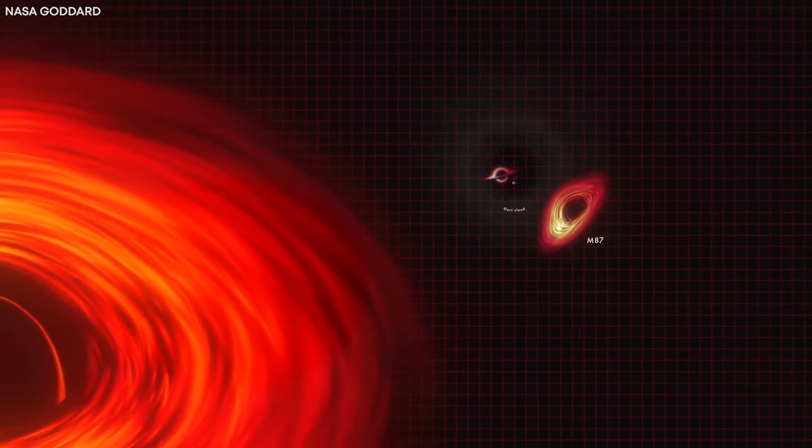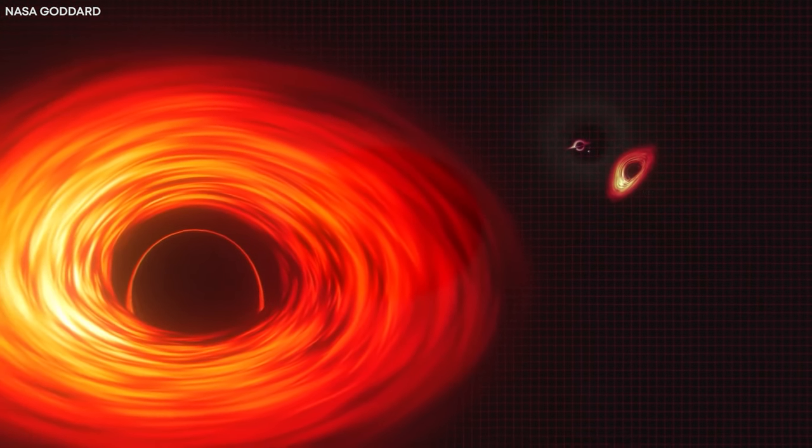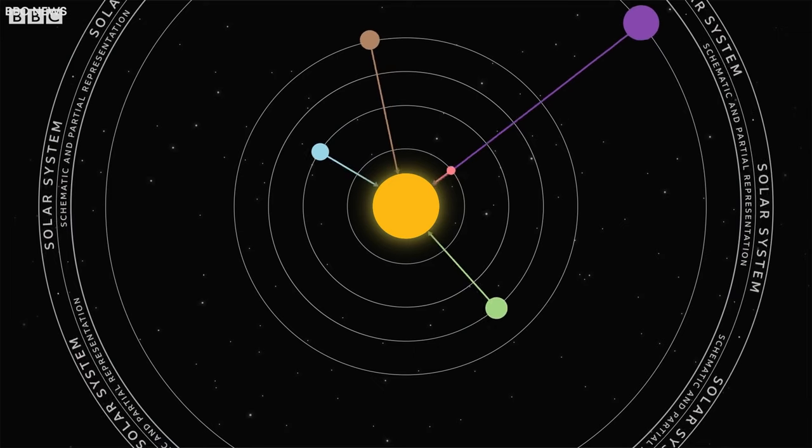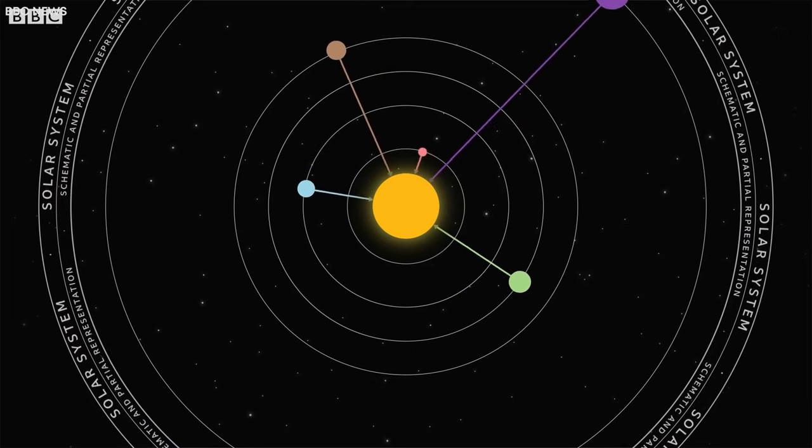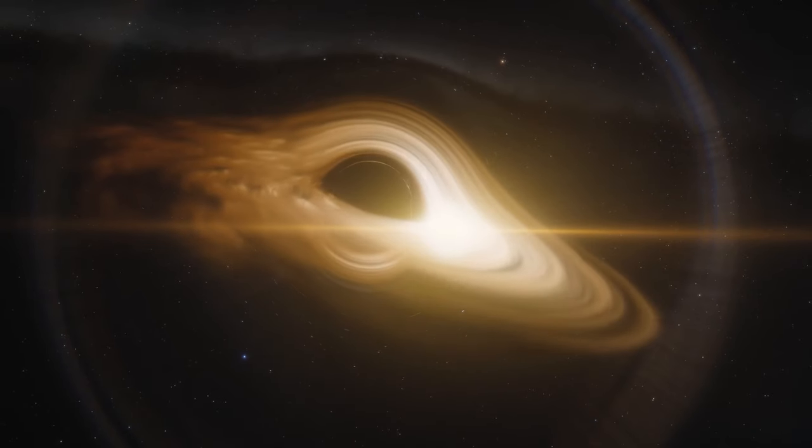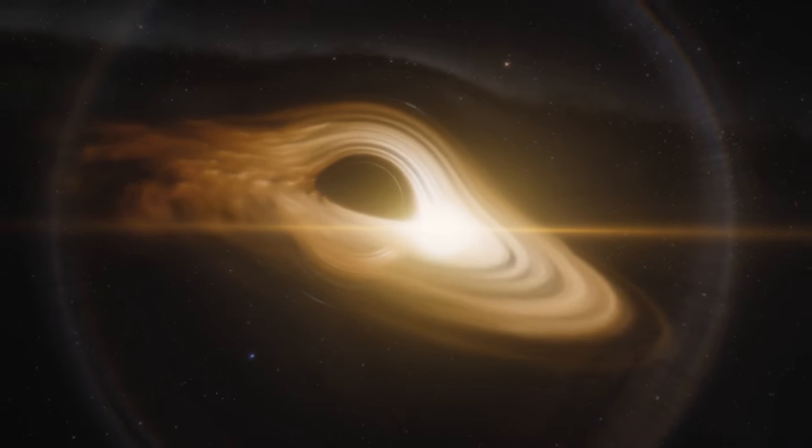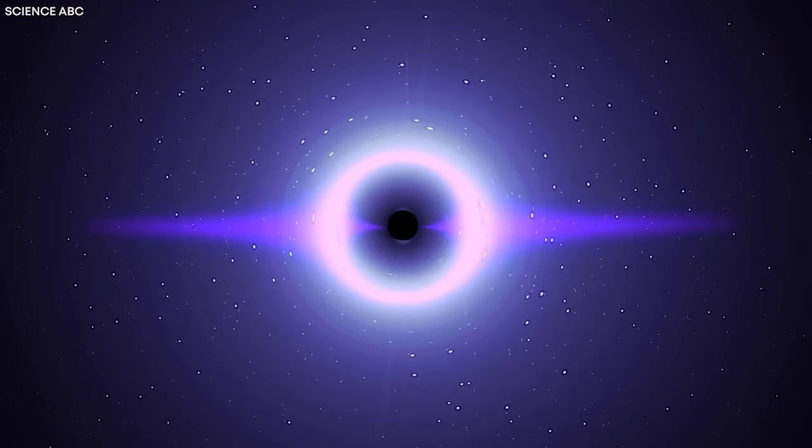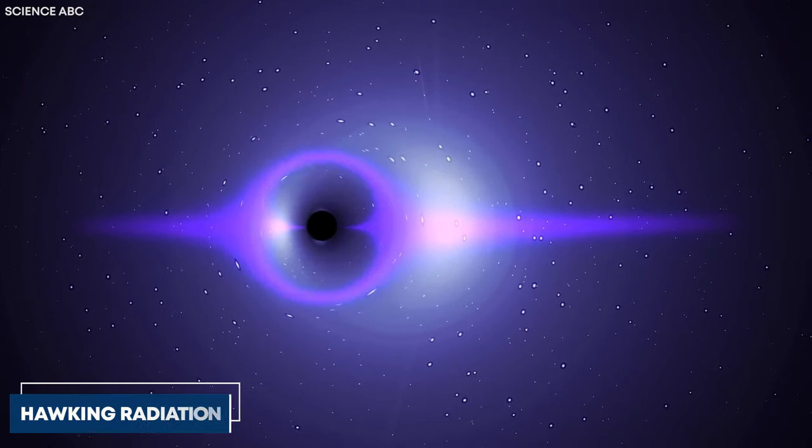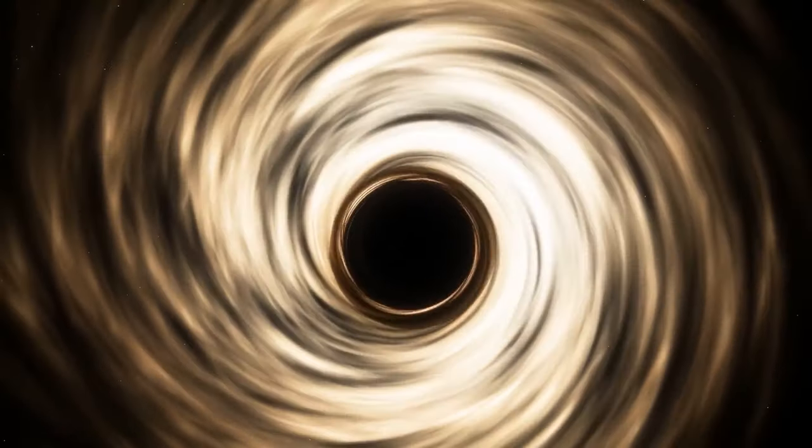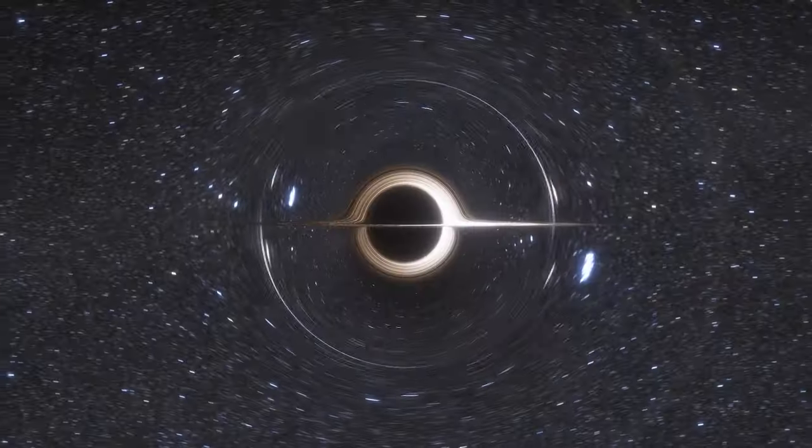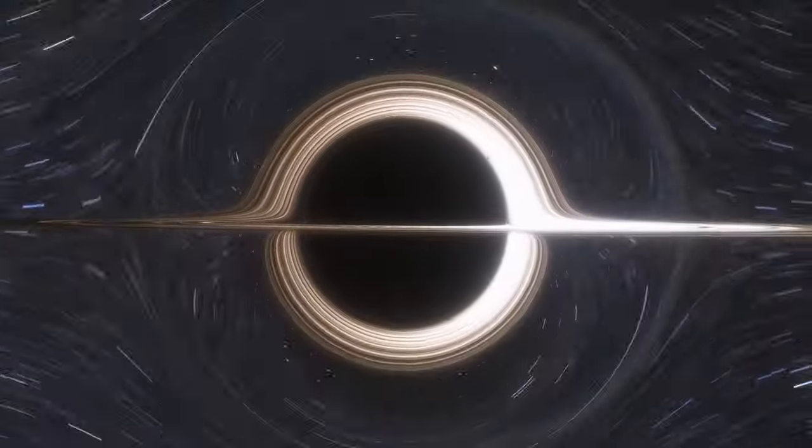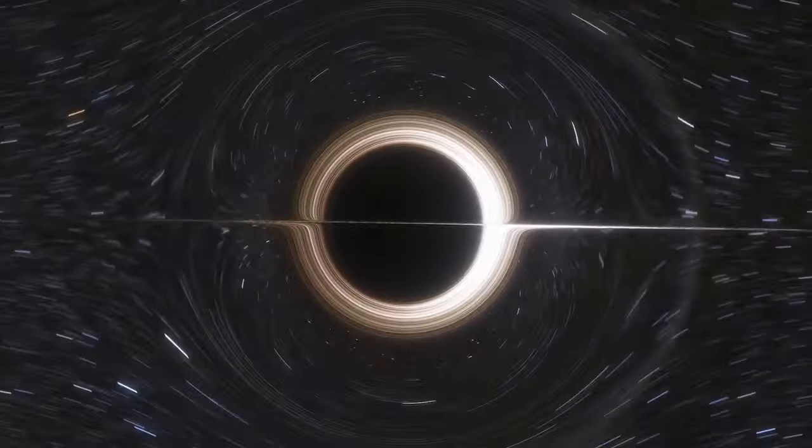However, scientists have thoroughly addressed and debunked these concerns. According to calculations based on the theory of general relativity, even if tiny black holes were created at the LHC, they would quickly vanish through a process called Hawking radiation. This radiation, proposed by physicist Stephen Hawking, states that black holes emit energy and gradually lose mass over time until they eventually disappear without enough time to interact significantly with surrounding matter or grow in size.